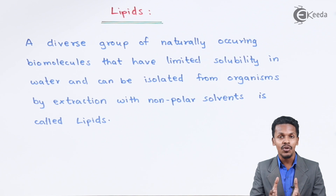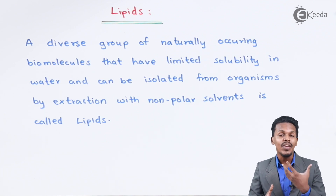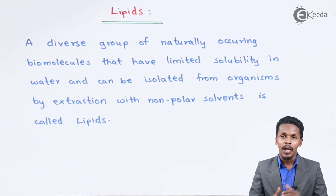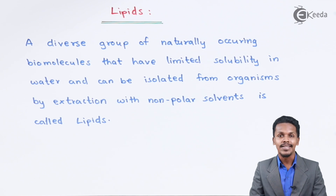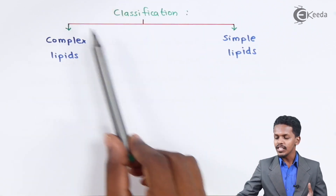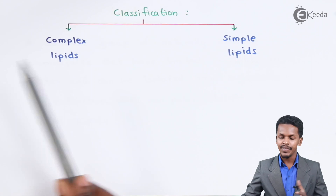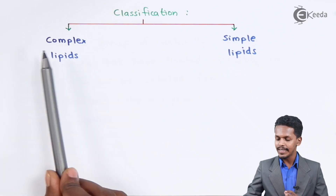Lipids are basically classified into two types. Based on that, let us understand the classification of lipids, from which we can also study various other biomolecules. Lipids are classified into complex lipids and simple lipids.